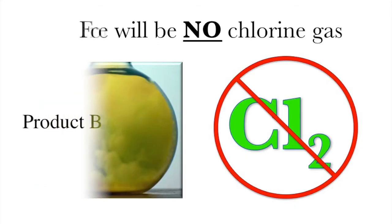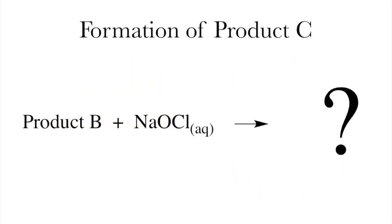The general form for the reaction today will use the product of part B of last week. This will undergo the haloform reaction using bleach to give you your final product C.